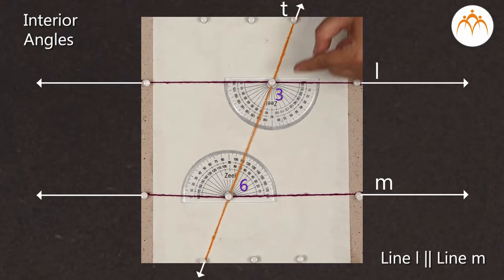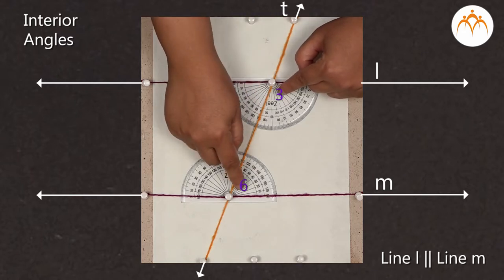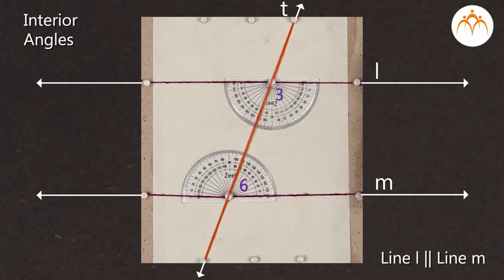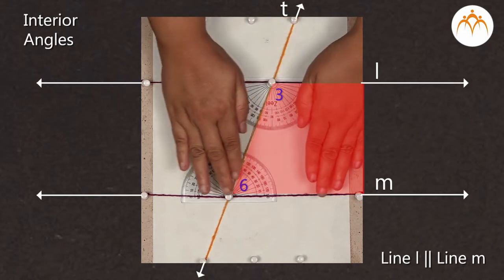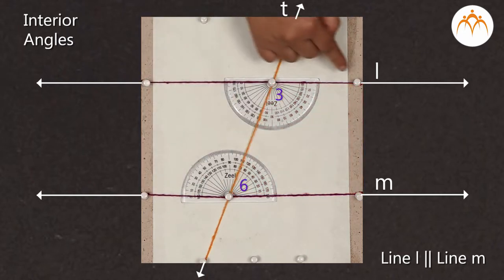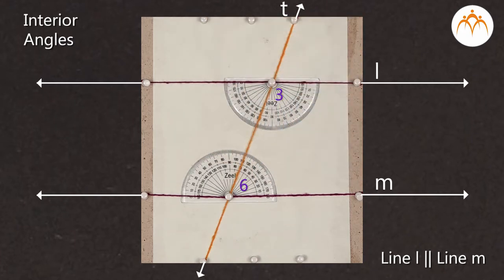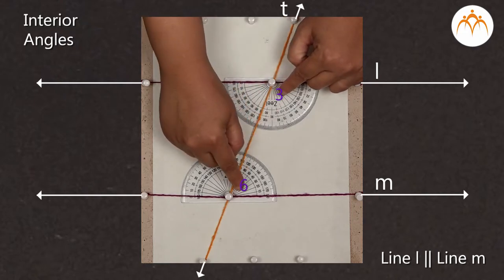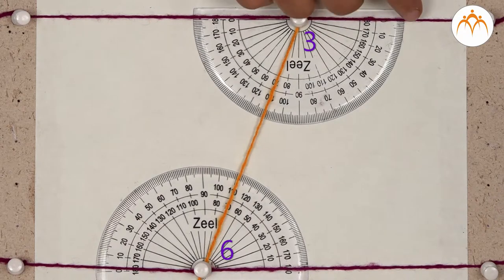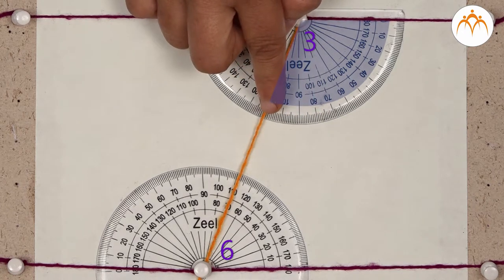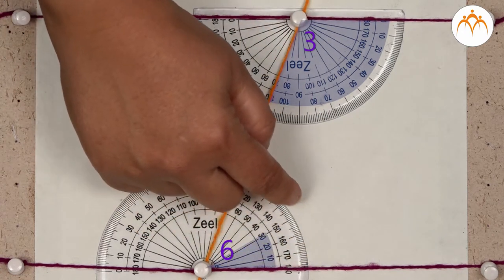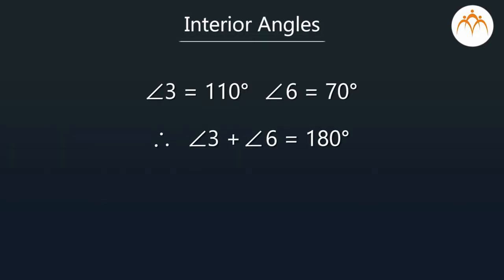Angle 3 and angle 6 lie on the same side of the transversal T — in this case, on the right side — but in the interior of the region formed by line L and line M. Hence, they are called interior angles. Angle 3 measures 110 degrees and angle 6 measures 70 degrees. If we add their measures, it is equal to 180 degrees.